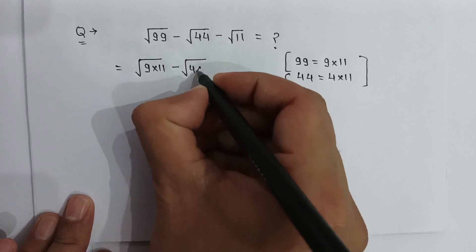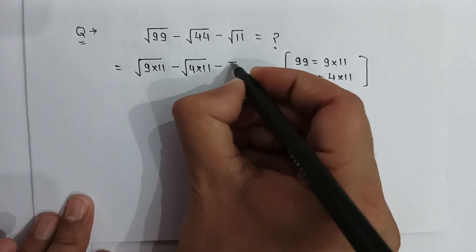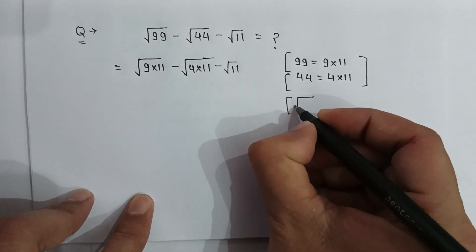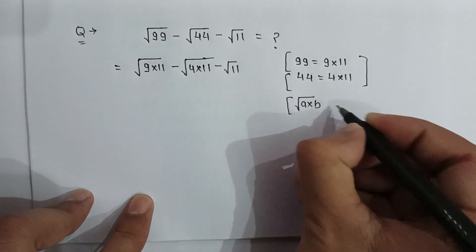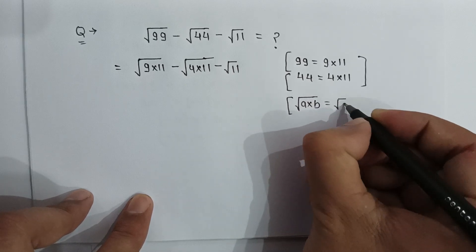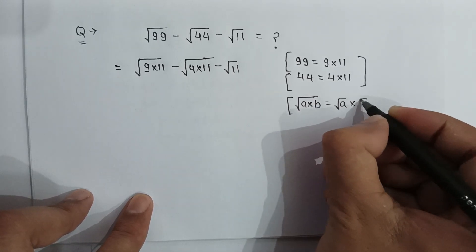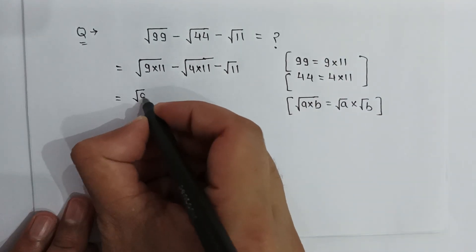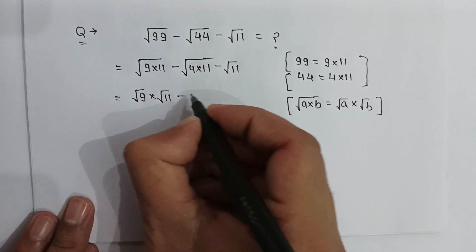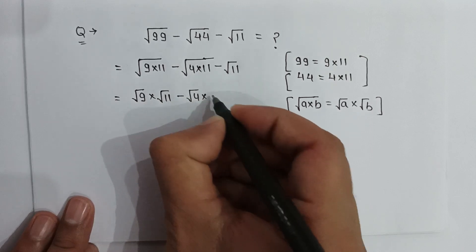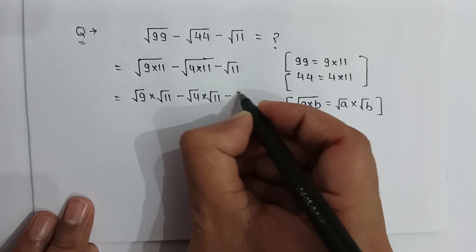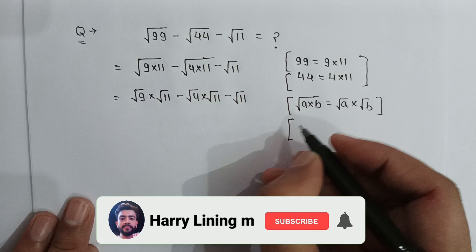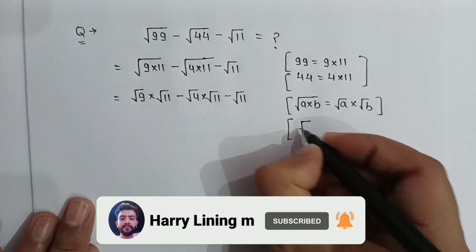As we know, if square root of a multiplied by b is written, it can be written as square root of a multiplied by square root of b. So it will be square root of 9 multiplied by square root of 11, minus square root of 4 multiplied by square root of 11, minus square root of 11.